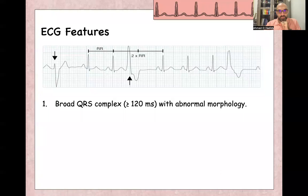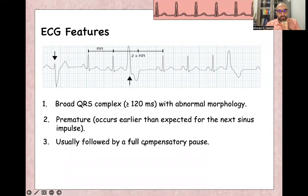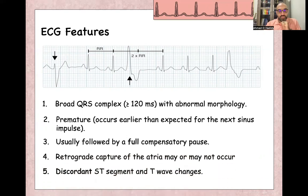ECG features of premature ventricular contractions: wide complex more than 120 milliseconds, abnormal morphology — taller and wider — and premature, early than expected. Usually followed by a full compensatory pause. To measure it, we measure from the R-wave before the PVC to the R-wave after, and this duration should be double the normal R-R interval — that is a complete compensatory pause. Multiple PVCs can be seen in sequence, and there may even be retrograde capture of the atria, with depolarization of the atria due to retrograde conduction.